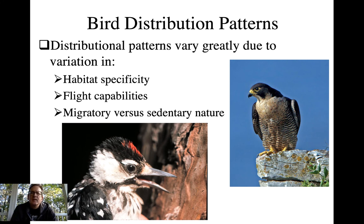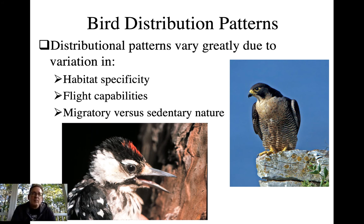Some birds are very habitat-specific and have a very limited range — the red-cockaded woodpecker is a good example, requiring open mature pine stands burned very regularly to reduce the mid-story and brushy understory, with grassy understories. As opposed to something like the peregrine falcon, which has a worldwide distribution, great flight capabilities for dispersal, and is much less habitat-specific. Sedentary species that stay in one place will often occupy less territory, whereas migratory species have breeding ranges, wintering ranges, and transitional stopover areas, giving them more complex distribution patterns.